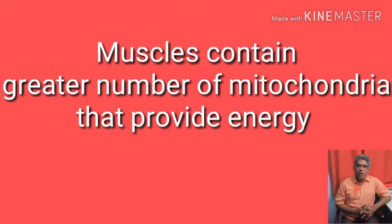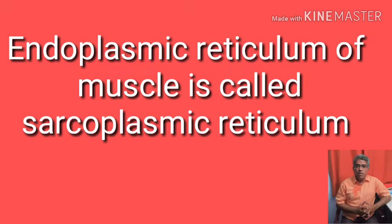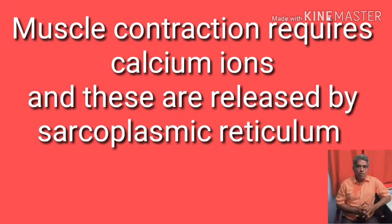The endoplasmic reticulum found in the muscle is called sarcoplasmic reticulum, and it belongs to the smooth type. The sarcoplasmic reticulum of the muscle cell is smooth endoplasmic reticulum made up of many cisternae. The terminal cisternae are loaded with calcium ions. These calcium ions are responsible for muscle contraction — that means the chemical ions required for contraction of muscles are Ca²⁺ ions.